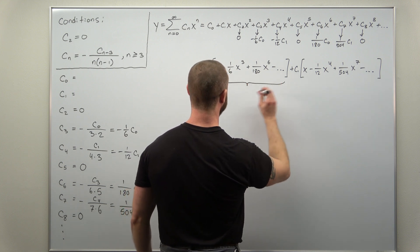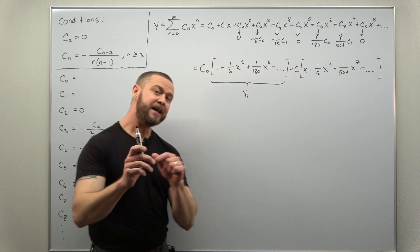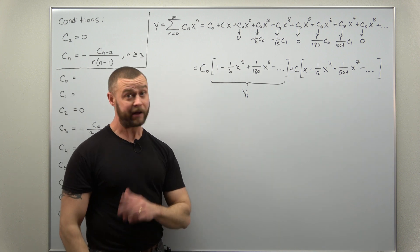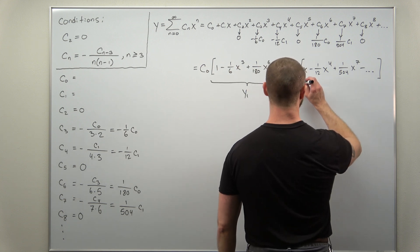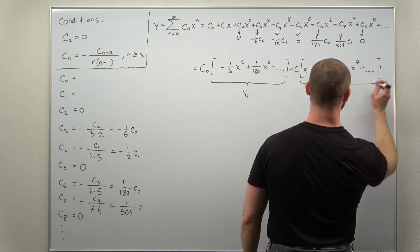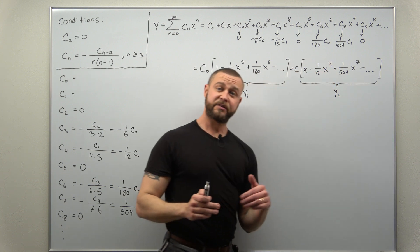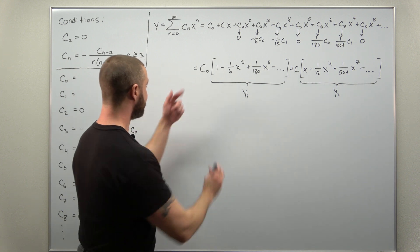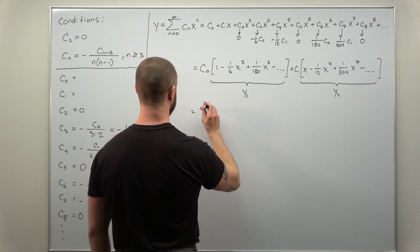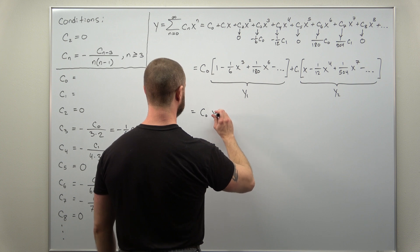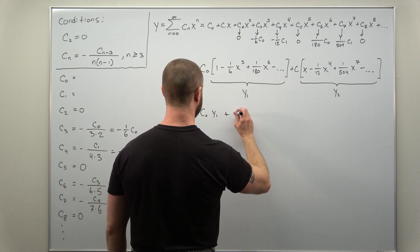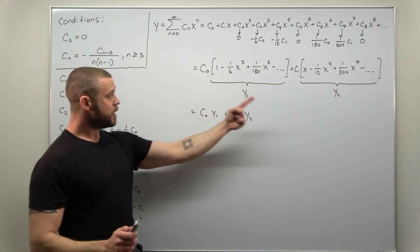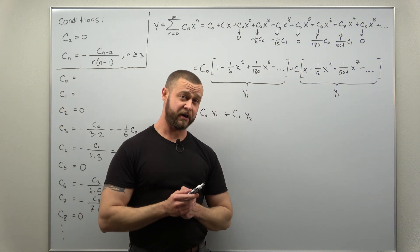And notice what we have here. We have a constant times a bunch of stuff, another constant times a bunch of stuff. I have no idea what this function is, but that is a power series representation for some function. We'll call that y1. And the same thing here - this power series represents some other function, we'll call it y2. And we now have our solution written with constants times y1 and y2, where we have y1 and y2 as these power series representations.